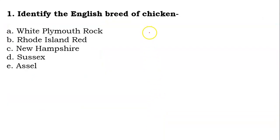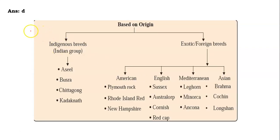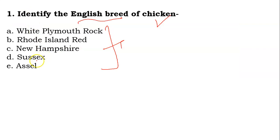What is our first question for today? Identify the English breed of chicken. There are various breeds of chicken and you have to identify which breed is related to the English. So its answer will be D — Sussex is known as the English breed amongst all these types of breeds.